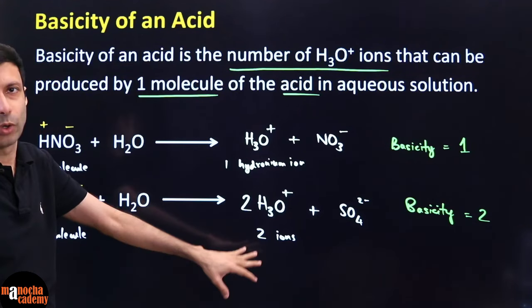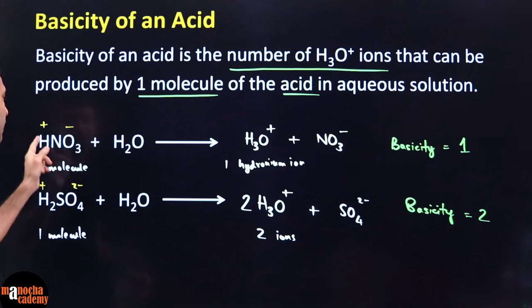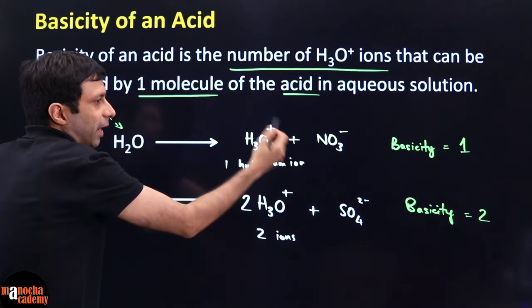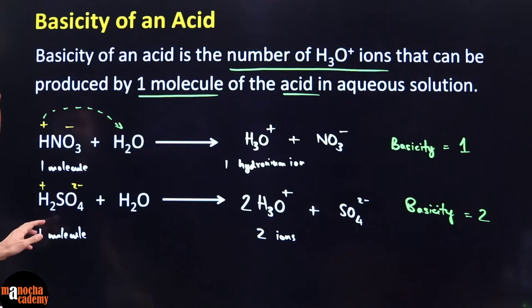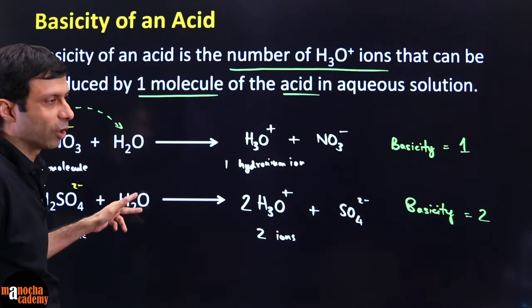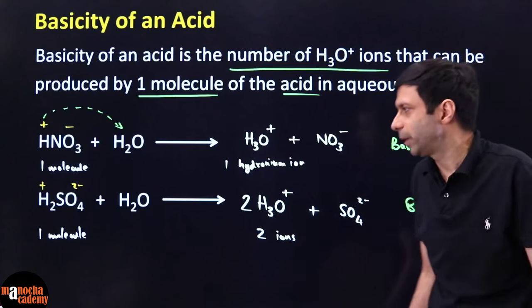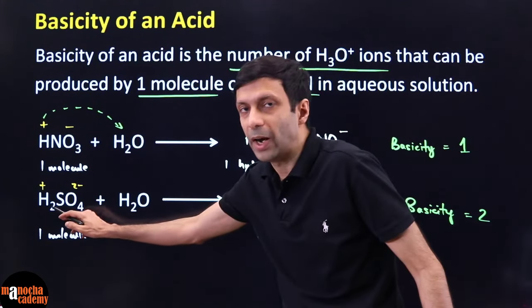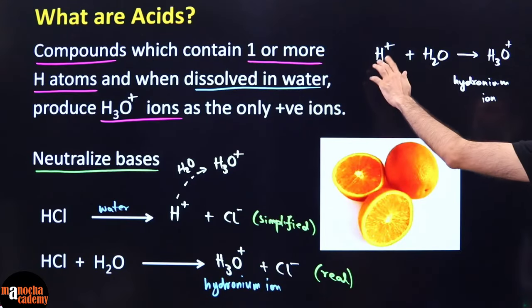The main trick is to see how many replaceable hydrogens are ready to leave the acid — that is the basicity. In nitric acid, one hydrogen was ready to leave, combining with water to produce one hydronium: basicity one. In sulfuric acid, both hydrogens leave and produce two hydronium: basicity two.